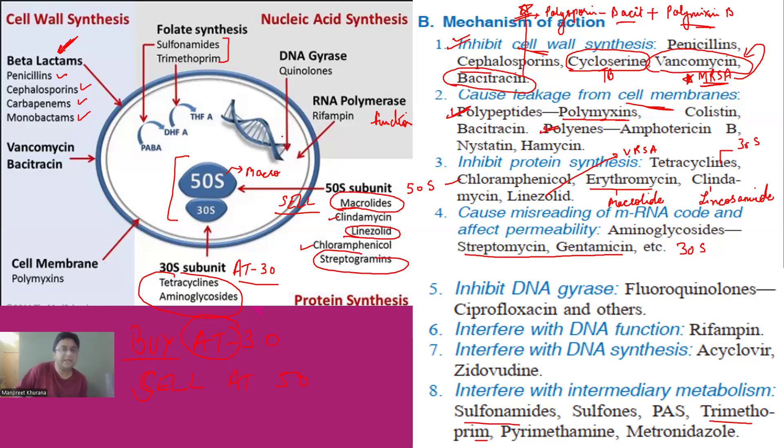Now, if we see the DNA function or the DNA synthesis. So if you see the DNA gyrase, quinolones or fluoroquinolones are the antibiotics which are acting on DNA gyrase. Then RNA polymerase or you can say DNA function, we have the rifampin. So if you see the drugs acting on DNA gyrase are fluoroquinolones like ciprofloxacin, ofloxacin. DNA function is rifampin.